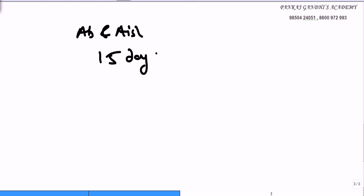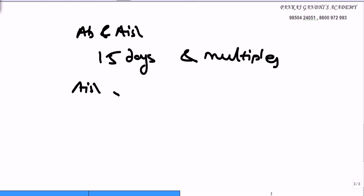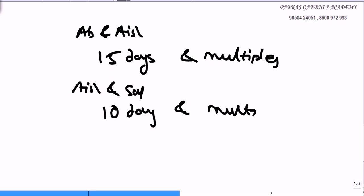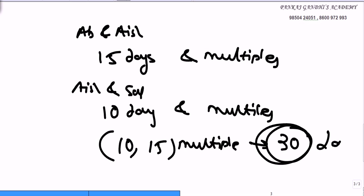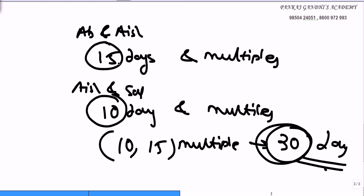So what we know is: Abhishek and Ashwarya's watches will show the same time after every fifteen days and its multiples. Ashwarya and Salman's watches will show the same time after every ten days and its multiples. So if we want all three to show the same time, it must be a multiple of both ten and fifteen — that is after every thirty days, all three watches will show the same time.